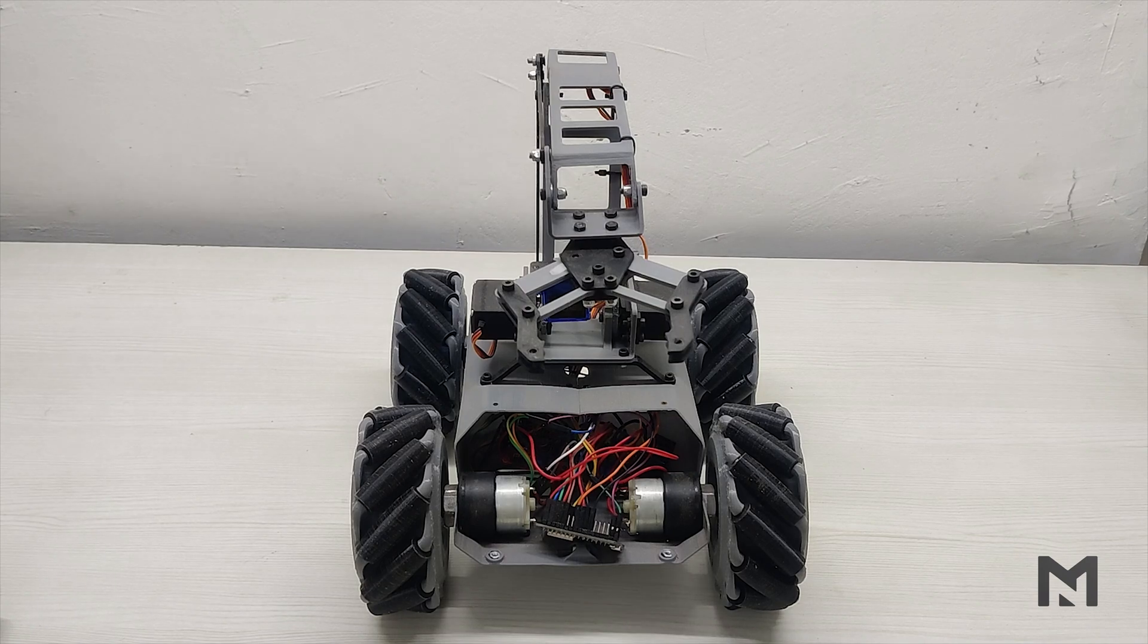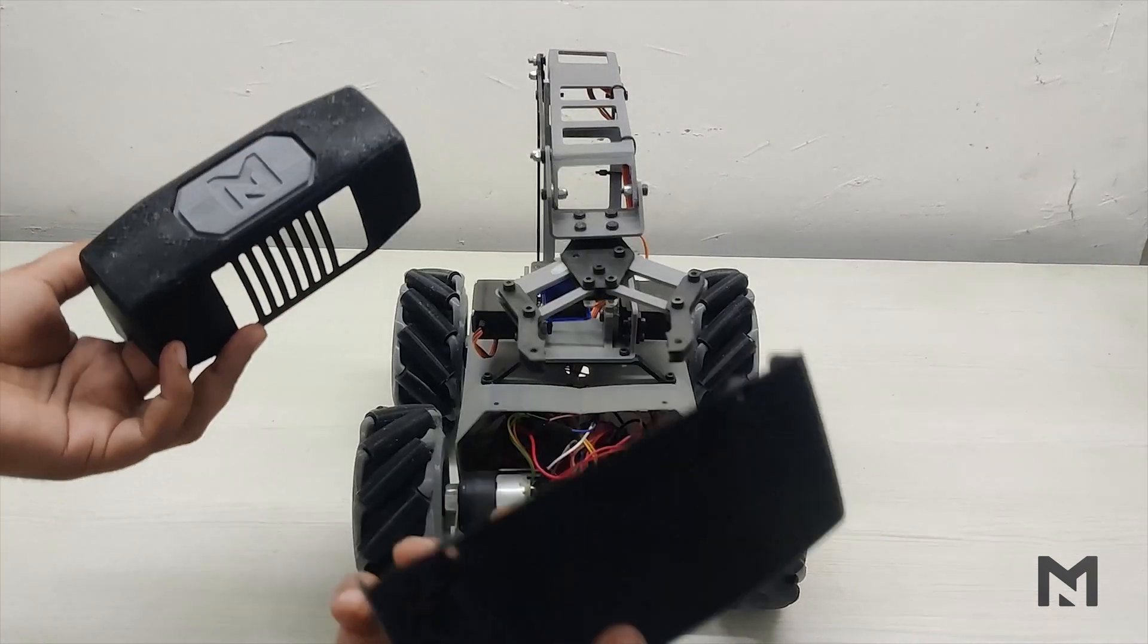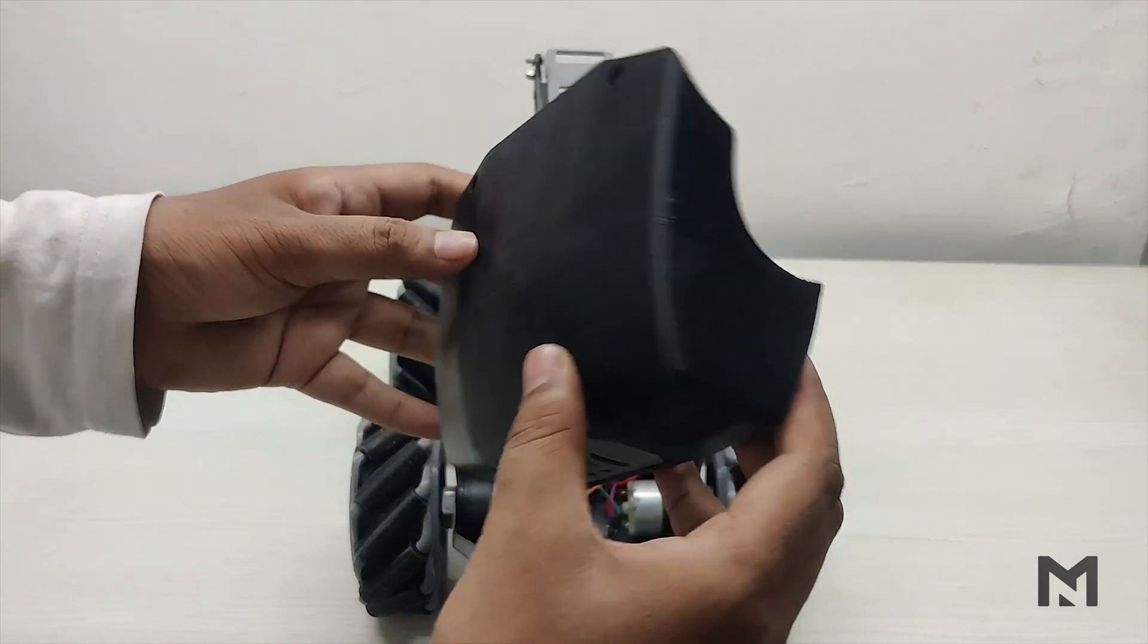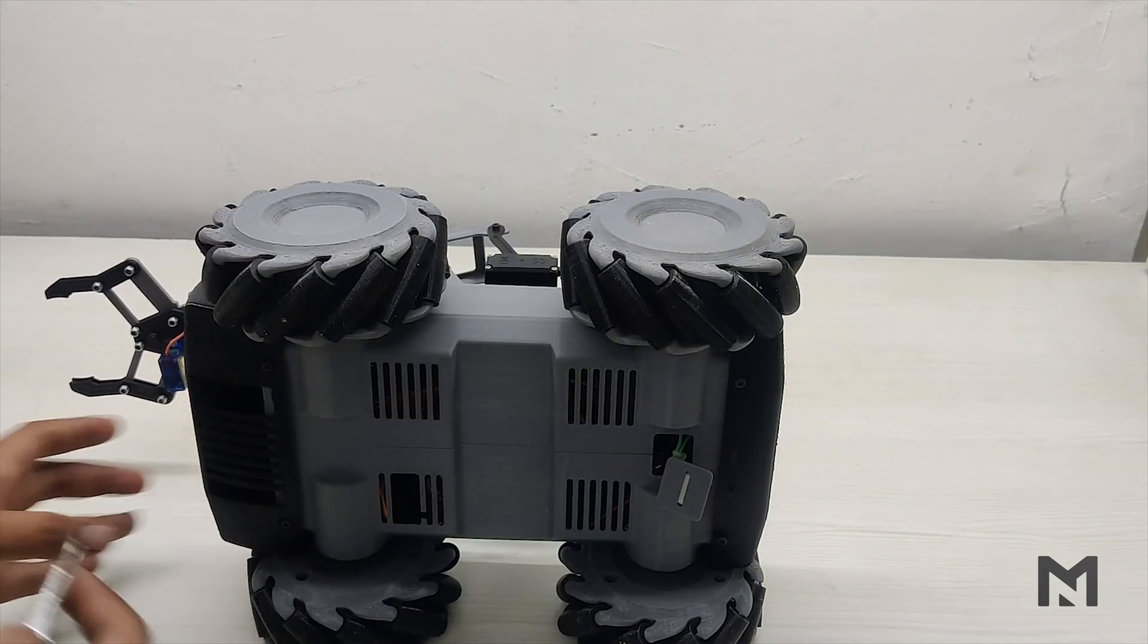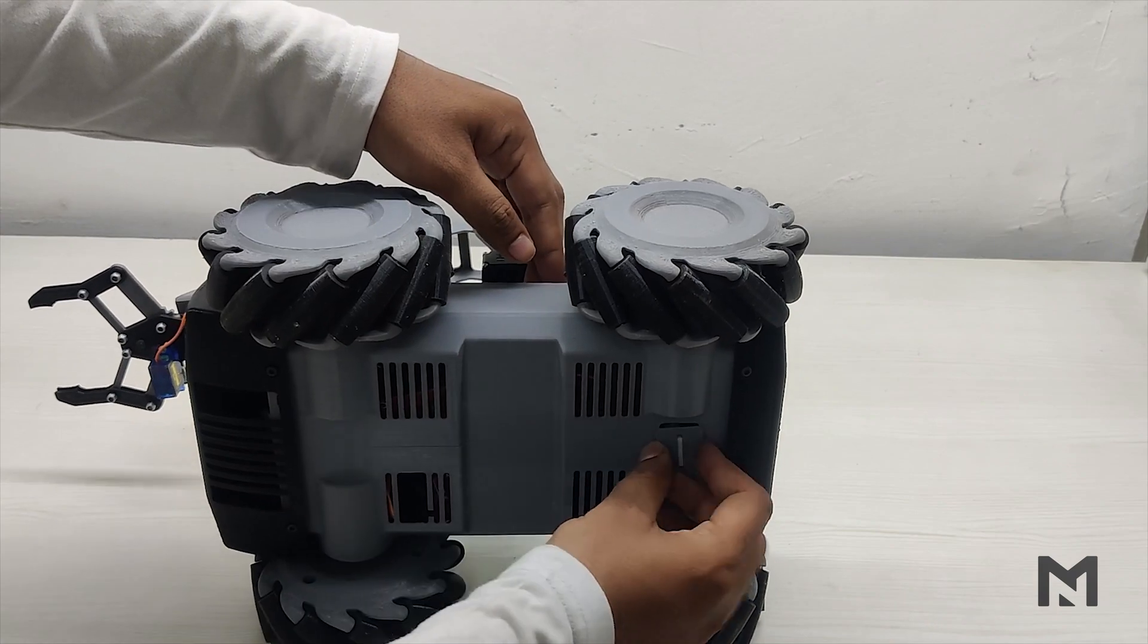Now the final assembly of the robot is completed and it's time to attach the front and back panels. I connected both the panels using M3 screws of 15mm length.